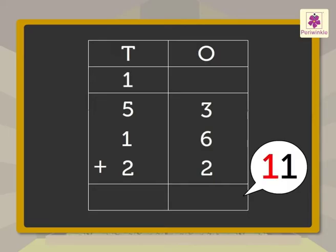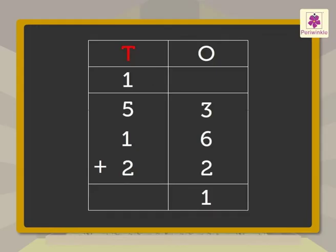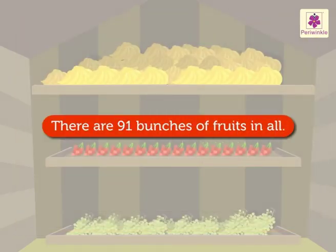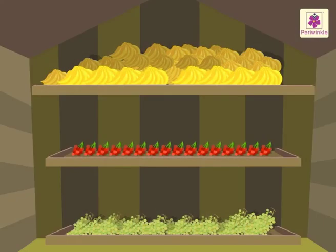Carry one ten to the tens column and write one in the ones column. Now add the tens: 1 plus 5 plus 1 plus 2, which is equal to 9. Thus 53 plus 16 plus 22 is equal to ninety-one. There are ninety-one bunches of fruits in all.